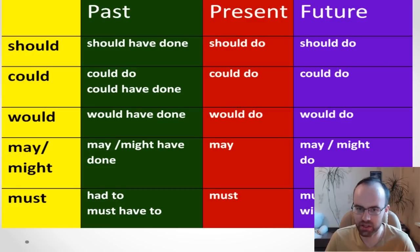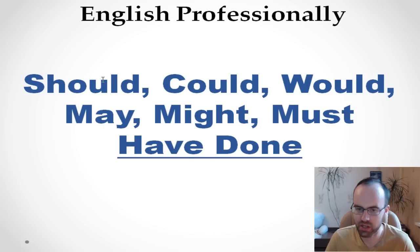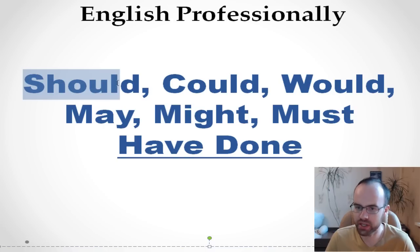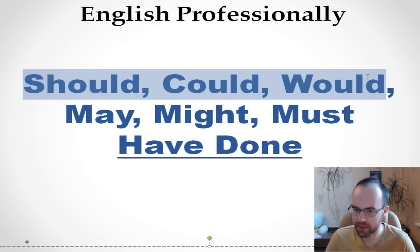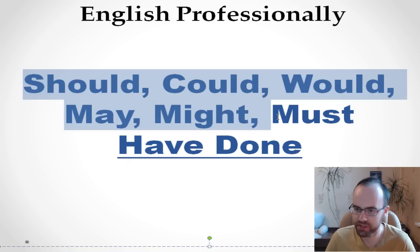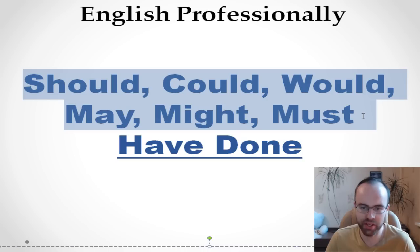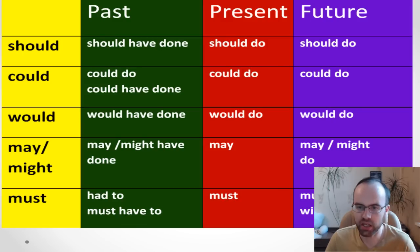Let's have a look at this table and try to understand when we need to say should have done, could have done, would have done, may have done, might have done, and must have done. These things aren't for beginners.